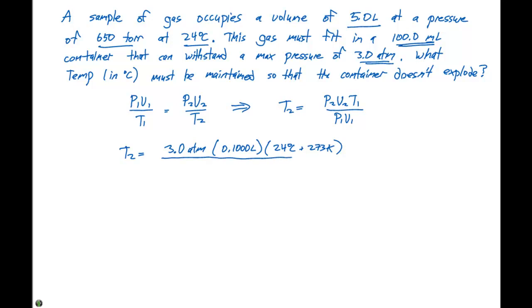Then that's going to be divided by P1, which is 650 Torr, times V1, which is 5.0 liters, so we can see here that our liters are going to cancel. We've gotten rid of the Celsius, and we're left with Kelvin here for a temperature, which is a unit that we want since we're solving for temperature.